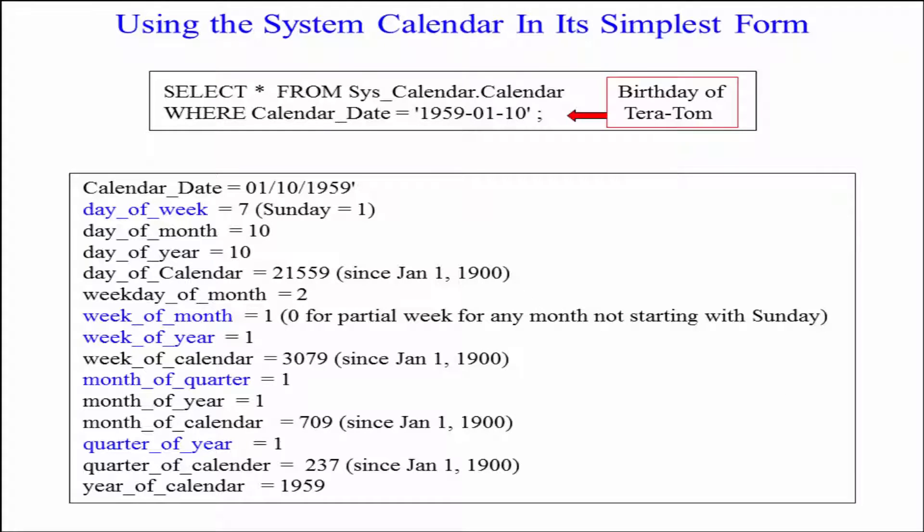Here's the calendar date. Here's the day of the week — one is a Sunday. I was born on a seven, so it was a Saturday. Saturday night. And then there's the day of the month, the day of the year, the day of the calendar. It's got a lot of things in here: week of month, week of year, and we'll see some of that coming up.